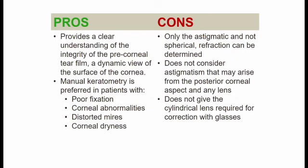In manual keratometry such as the Bosch and Lomb, it provides a clear understanding of the integrity of the pre-corneal tear film and a dynamic view of the surface of the cornea. It also gives direct visualisation of the reflections generated by the tear film, allowing recognition of areas of corneal surface irregularity. If the tear film is oily, disrupted, or the cornea has subtle dystrophy or degeneration, it will be reflected in the quality of the measurements.